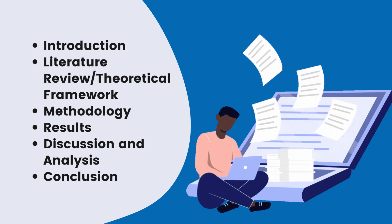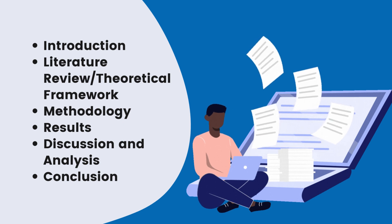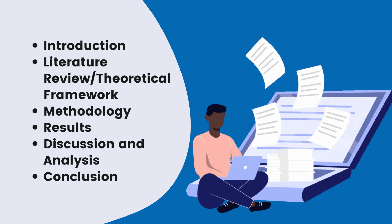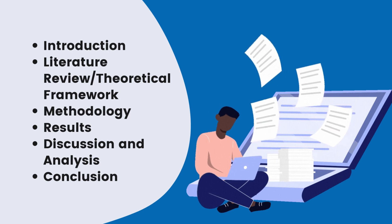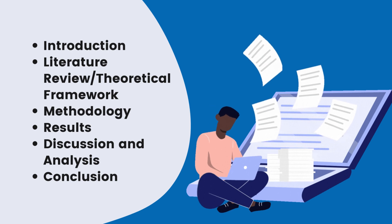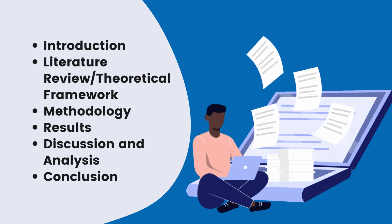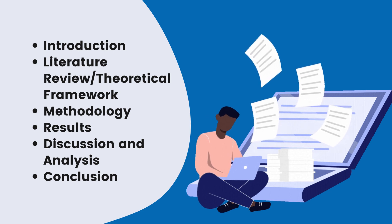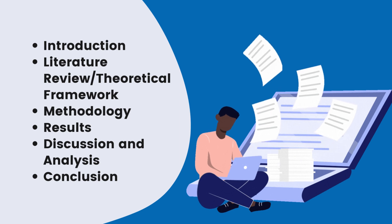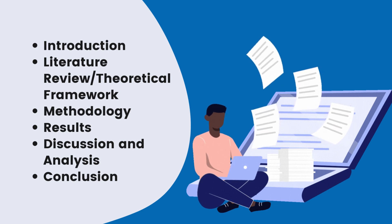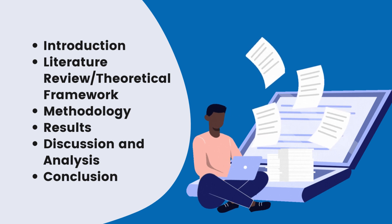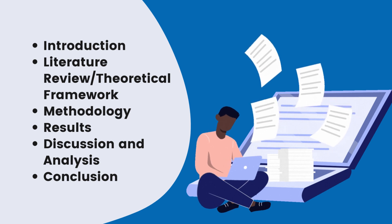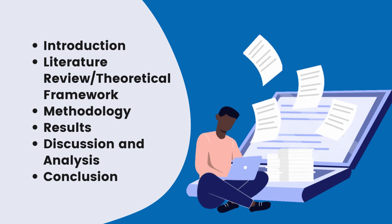The methodology section should explain your research design, data collection methods, and analysis techniques, and justify your choices demonstrating their suitability for answering your research questions. The results section presents findings using tables, graphs, and descriptive text, avoiding interpretation at this stage. The discussion and analysis interprets results in the context of your research questions and theoretical framework, addressing implications, contradictions, and limitations. The conclusion summarizes the chapter's key points, restates the main findings, and suggests possible avenues for future research.